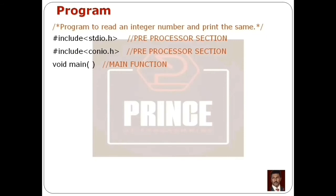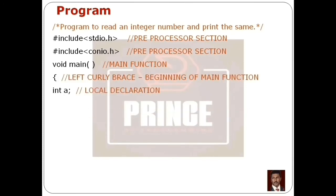The next is the Main Function with void return type. The beginning of the main function is marked by a left curly brace, leading into the Local Declaration Section. Since we read an integer number, we declare an integer variable with the int keyword and variable name A.